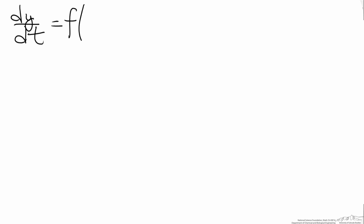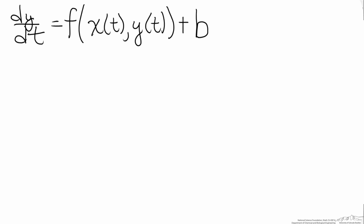This screencast will show the derivation of putting a differential equation that requires multiple linearizations, or just one linearization, into deviation variables. To do this, let's start with the generic differential equation dy/dt equals a term or multiple terms which are functions of our variables x and y, plus one or multiple terms that are not functions of x or y, which we'll represent as b.